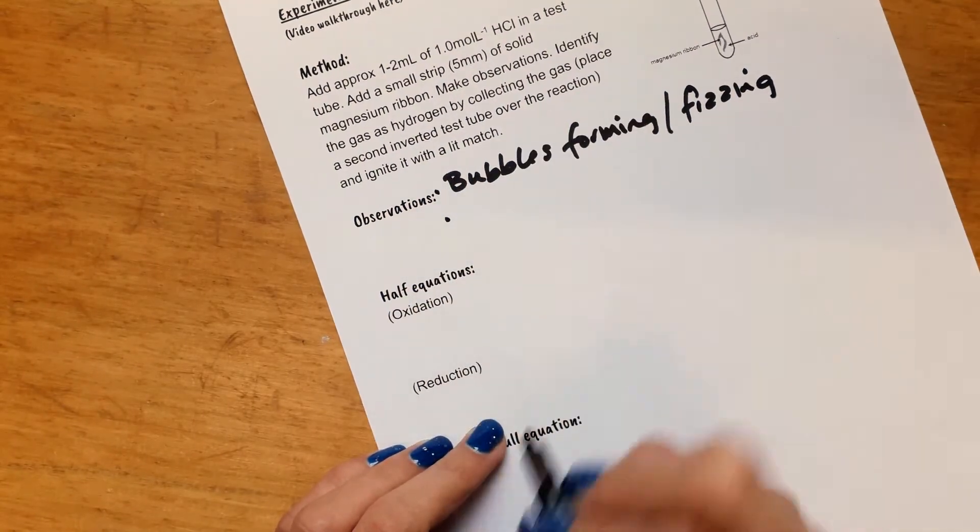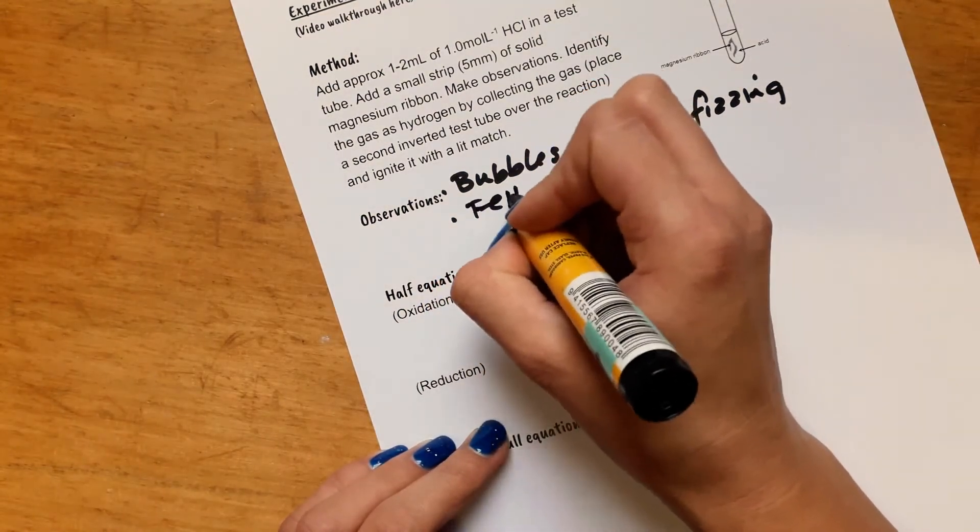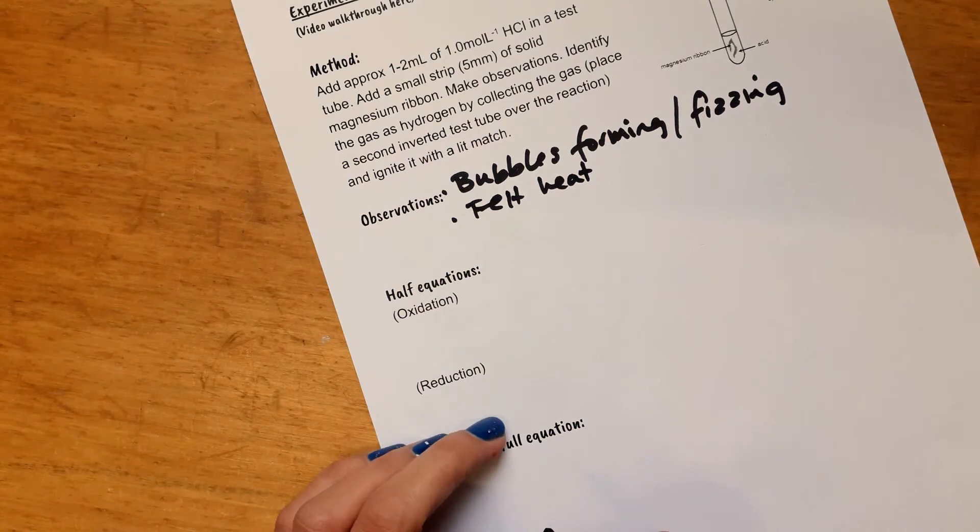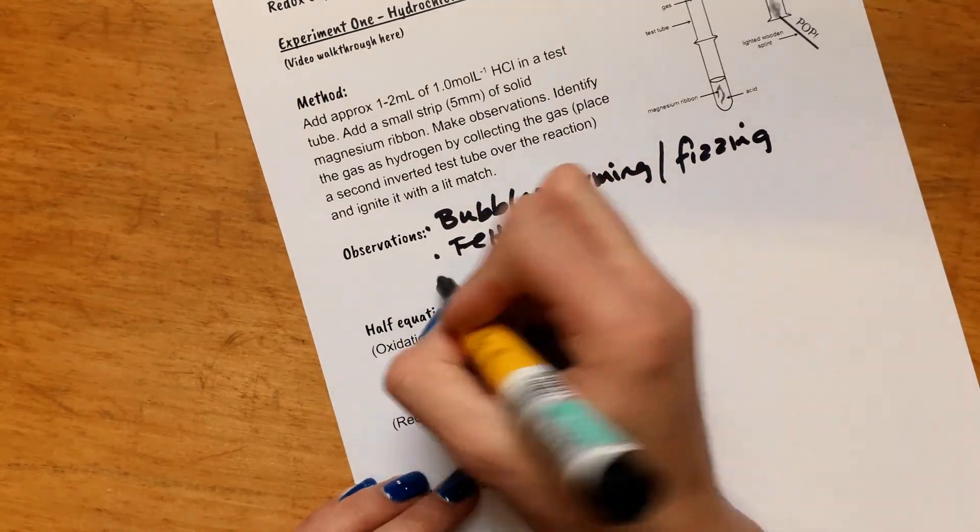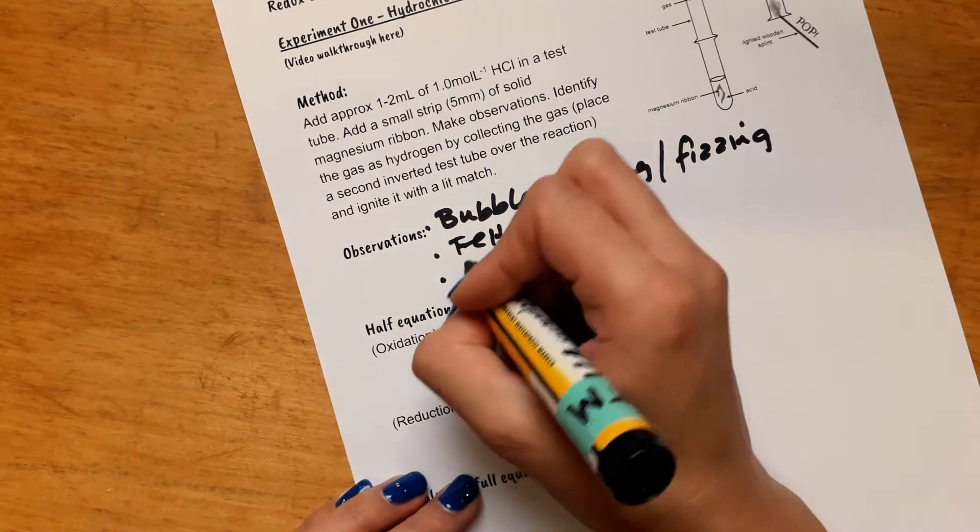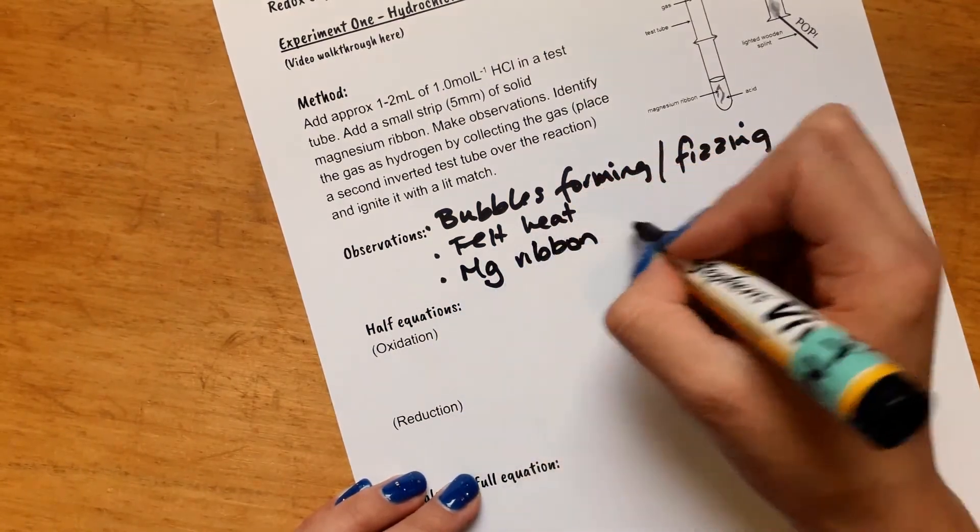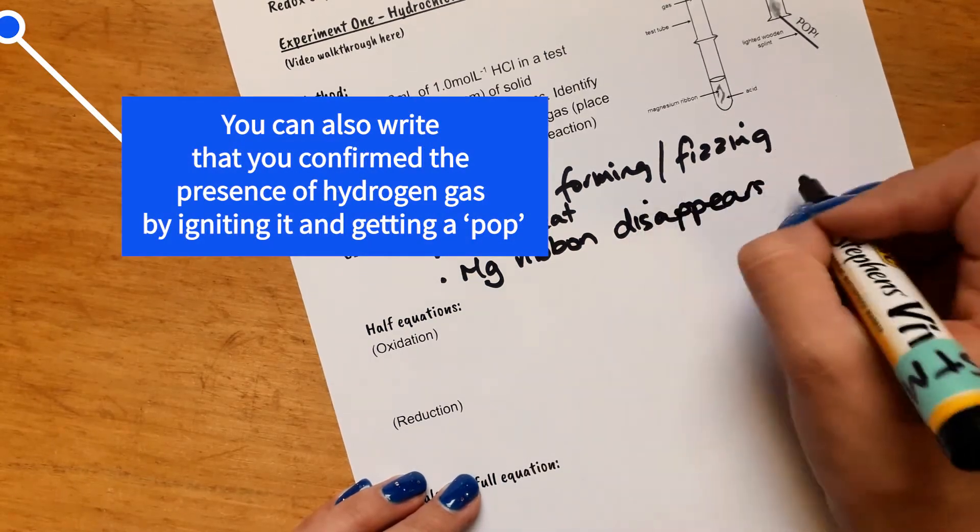And you also would see that the magnesium looks like it's disappearing. So you don't say dissolved because it's actually reacting. So you can just say what you see is that the magnesium ribbon disappears. Cool.